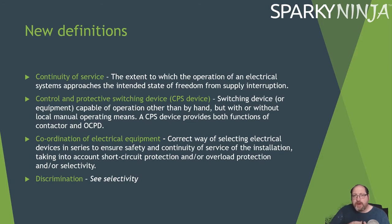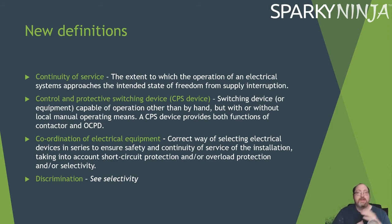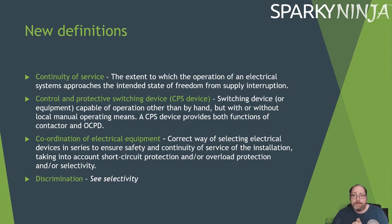Coordination of equipment is defined as the correct way of selecting equipment and devices in series to ensure safety and continuity of service, taking into account short circuit protection, overload protection, and selectivity. For example, a piece of equipment may not tolerate a prospective fault current of 3,000 amps, while the protective device at the distribution board has a breaking capacity of 6,000 amps. Coordination now means we must consider not just device capability but also equipment capability downstream. Discrimination has been moved and renamed to selectivity.